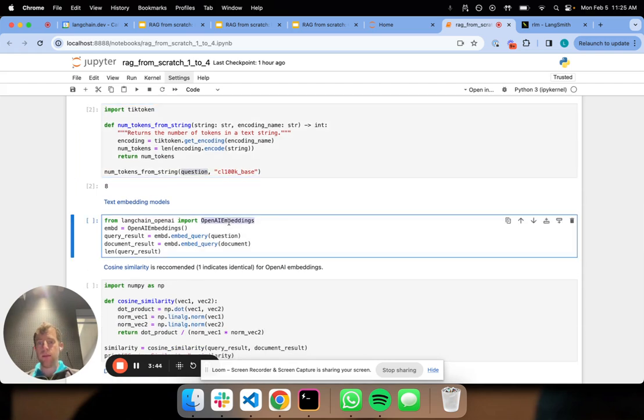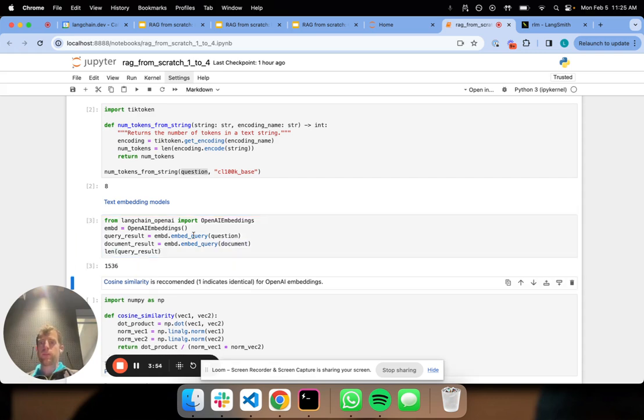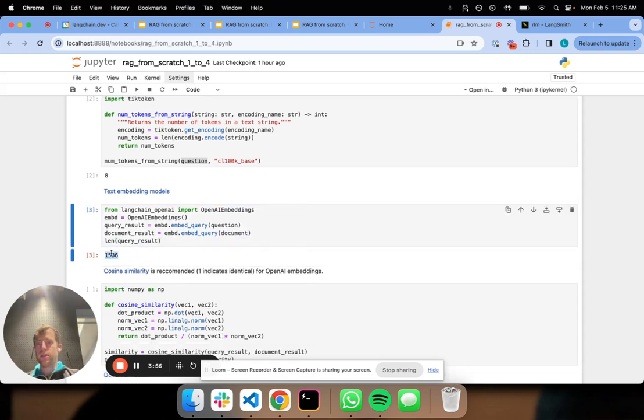Now, I'm going to specify OpenAI embeddings. I specify an embedding model and say embed query, I can pass my question or document. And what you can see is this is mapped to a vector of length 1536. That fixed length vector representation will be computed for any document. So you're always computing this fixed length vector that encodes the semantics of the text you've passed.